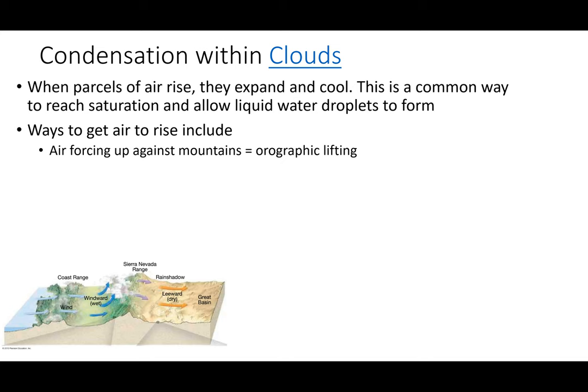How do you get a chunk of air to rise? One way: slam it up against a mountain. Generally in the US, air flows from west to east. So it hits the Sierra Nevada mountain range on the west coast, gets forced up — we call that orographic lifting. The chunk of air rises, expands, cools, and you see condensation forming clouds.